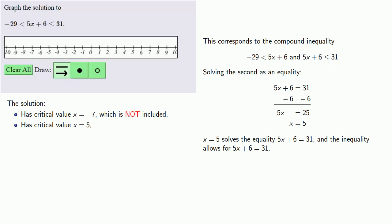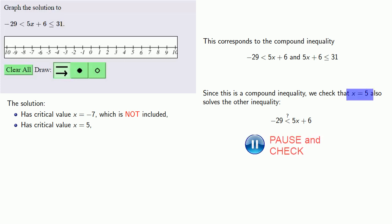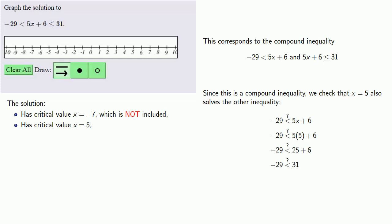But this is a compound inequality with an and, so in order for something to be part of the solution, it has to satisfy both inequalities. Since this is a compound inequality, we have to check that x equals 5 also solves the other inequality. Is it true that minus 29 is less than 5x plus 6 when x equals 5? We find that minus 29 is in fact less than 31, so this is true, and x equals 5 is going to be included. Our solution has a critical value x equals 5, which is included.